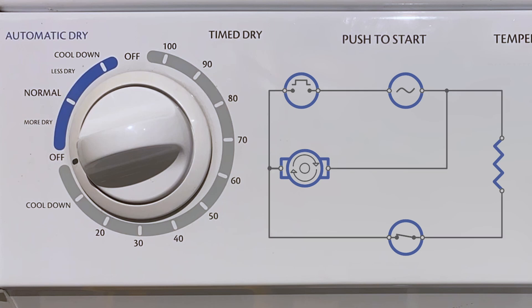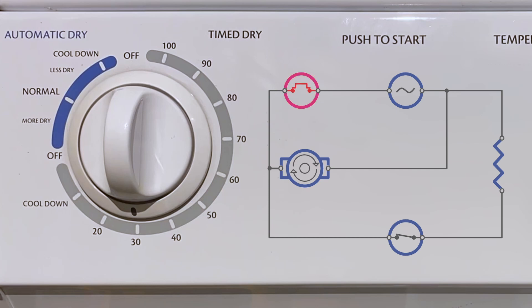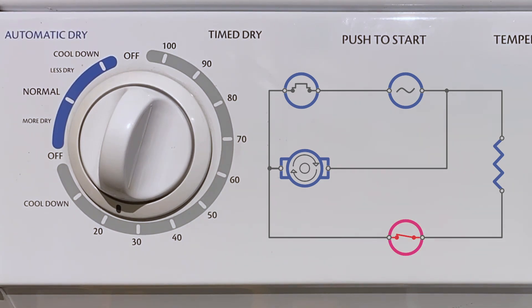Now I'll set the knob for 30 minutes and explain how this circuit will work. When we complete the circuit by hitting the start button, several things will happen. The knob motor will begin slowly advancing the knob at a constant speed back towards the off position, and since the laundry is cold, the thermal switch will begin closed causing the heating element to turn on.